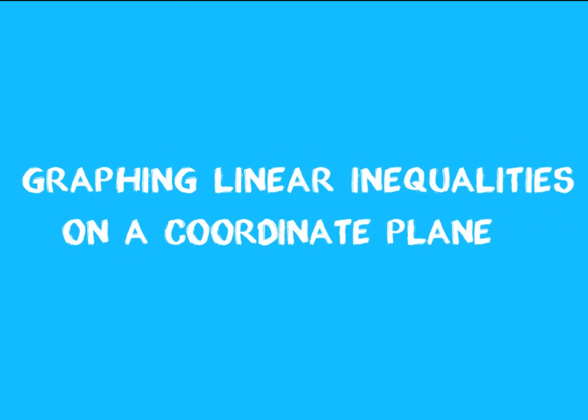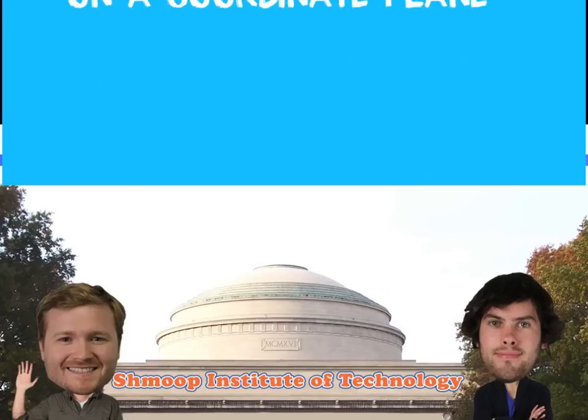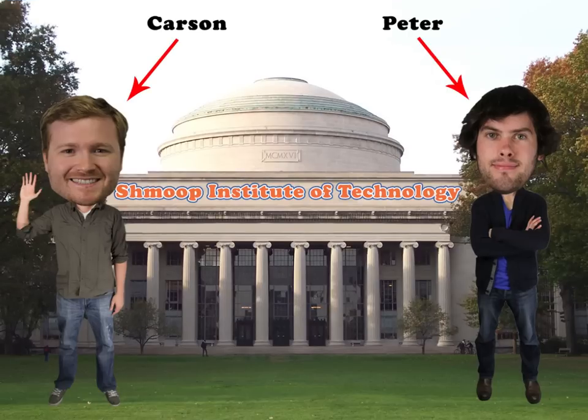Graphing Linear Inequalities on a Coordinate Plane, a la Shmoop. Carson and Peter are roommates in a college dorm. It's their first day of school at SIT, Shmoop Institute of Technology, and they need to decide who gets which side of their dorm room.